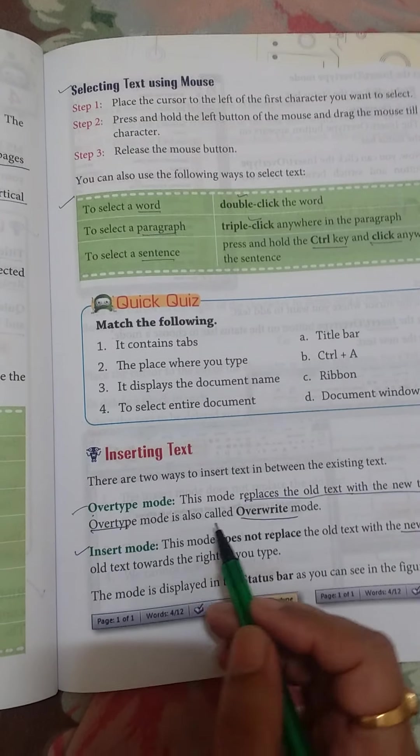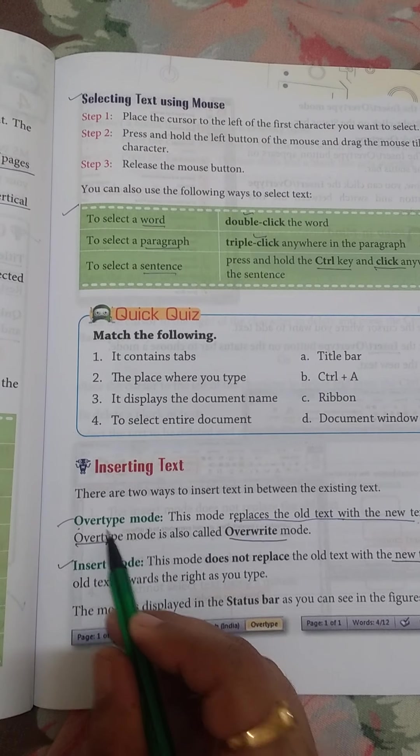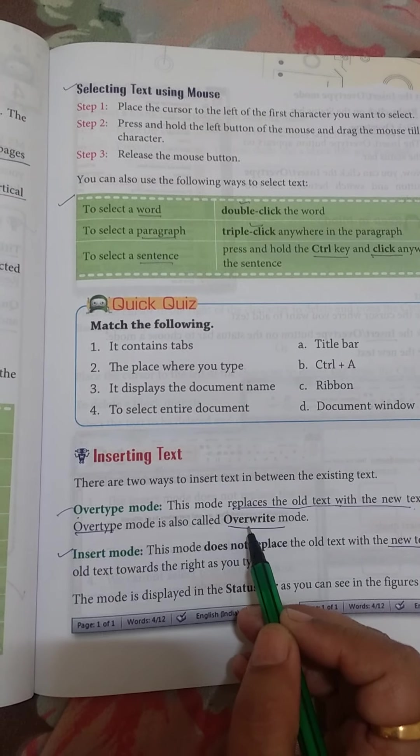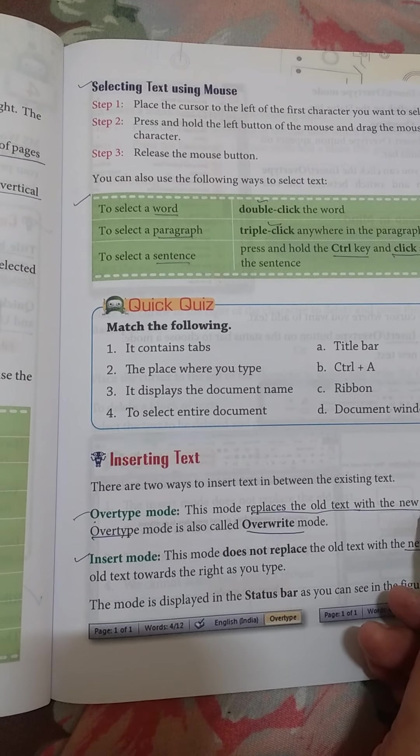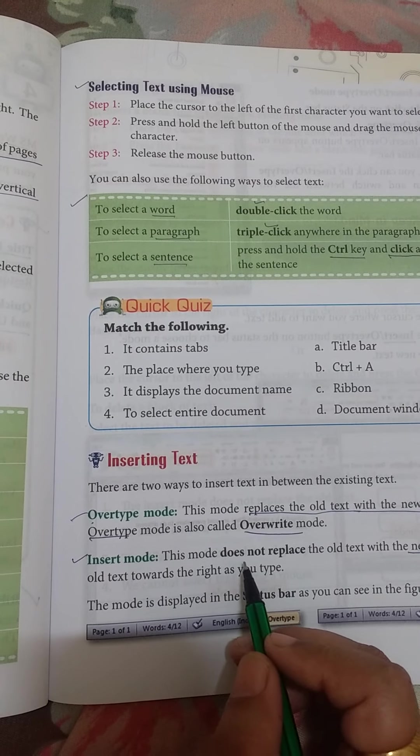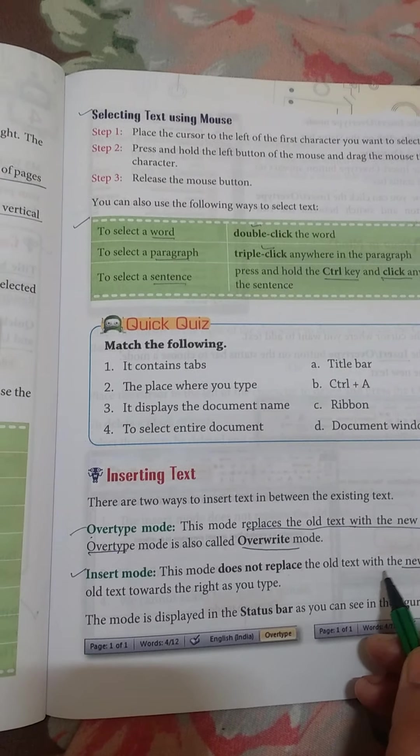Inserting text. How can we insert text? First is overtype mode. Overtype mode means we can replace the old text with the new text. Insert mode means we cannot replace the old text with new text.